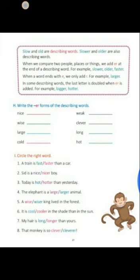Next is circle the right word. You can see in this exercise that two forms of a describing word are given, and you have to circle the right one.